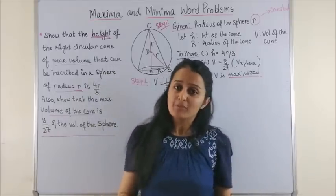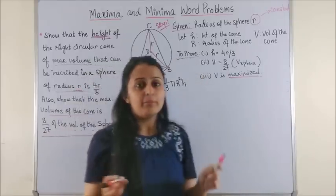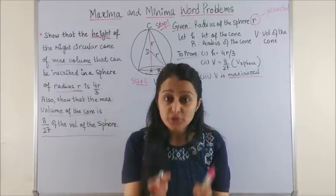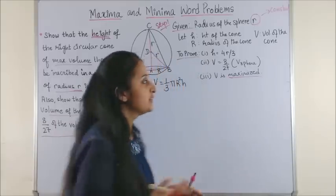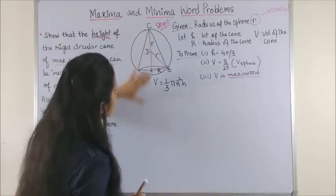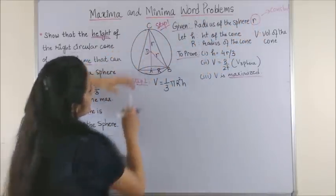Having done that, Step 3: ensure that your formula is only in terms of one variable. Now here capital R and H, both of them are the variables which you have introduced, so there are two variables. Now how do I convert it into one? Use your given information.